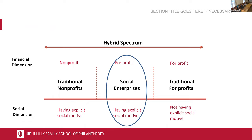Here we can see the hybrid spectrum of organizational forms. Traditional non-profits have non-profit orientations with social motives. Traditional for-profits are profit-oriented without explicit social motives. Social enterprises sit between these two dimensions — they are for-profit oriented but also have explicit social motives.